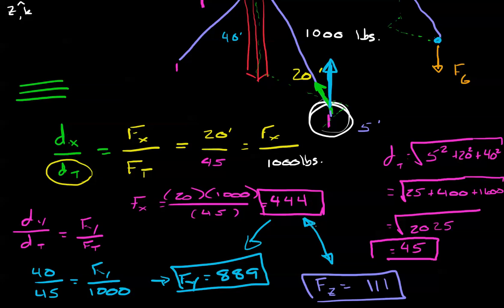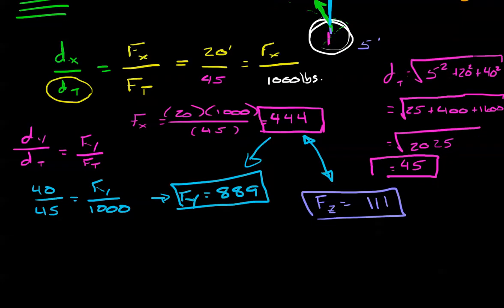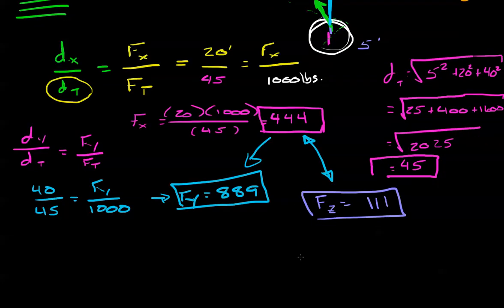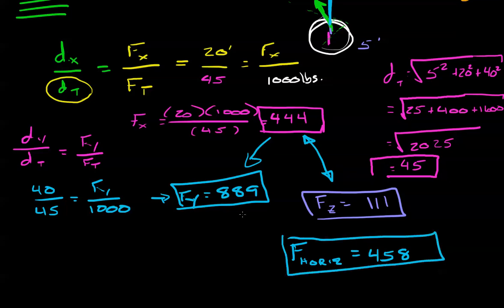And if we do that, we find that the total force horizontal is 458 pounds. Go ahead and run through that if you need to. You're just going to use the Pythagorean theorem of 111 squared plus 440 squared and take the square root. And the force vertical is 889 pounds. So, that's a nice little calculation we can do to make this actually useful.